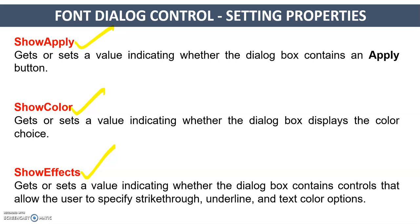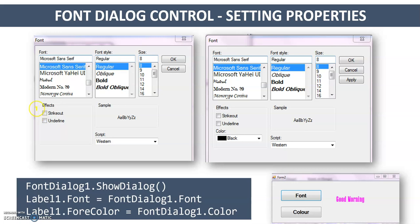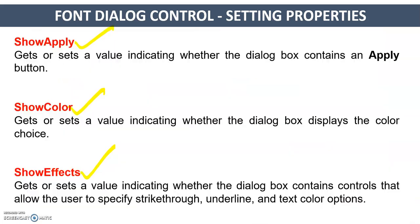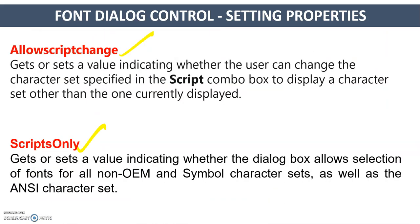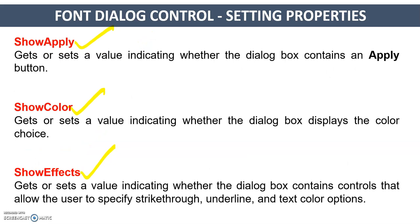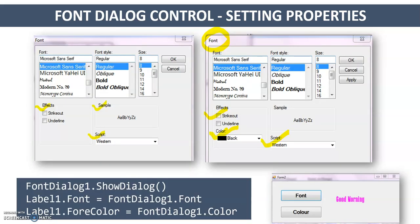These are the properties of the font dialog control. You can see Effects, Sample, Scripts, and Color in the dialog. The font dialog box has properties like effects, scripts, and colors. If you want to control which options appear, set properties like AllowScriptChange, ShowColor, and ShowEffects to true or false as required.